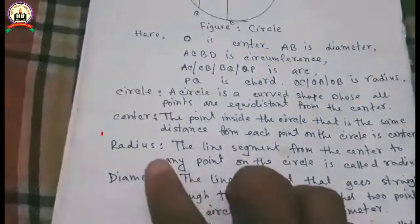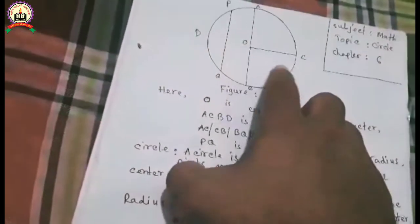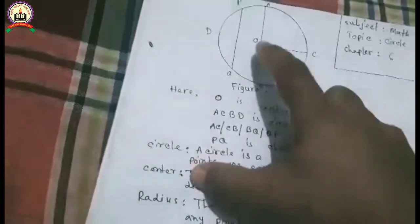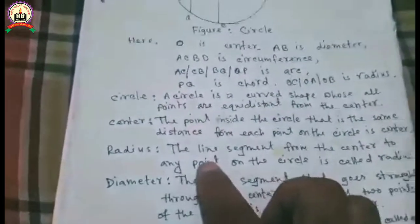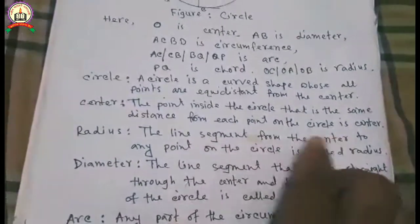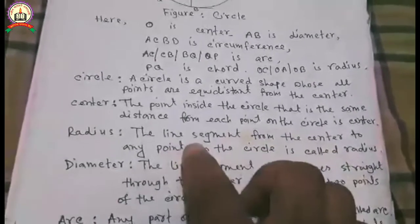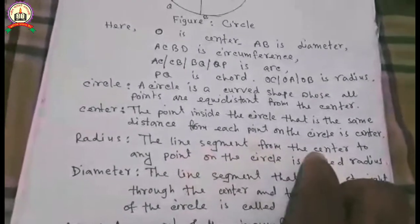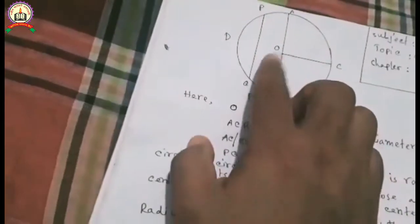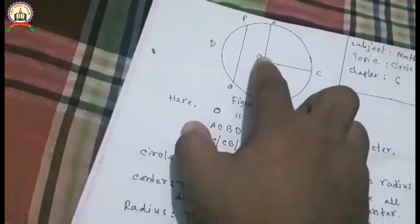Then, radius. In the figure, OC is radius, OA is radius, or OB is radius. The line segment from the center to any point on the circle is called radius.